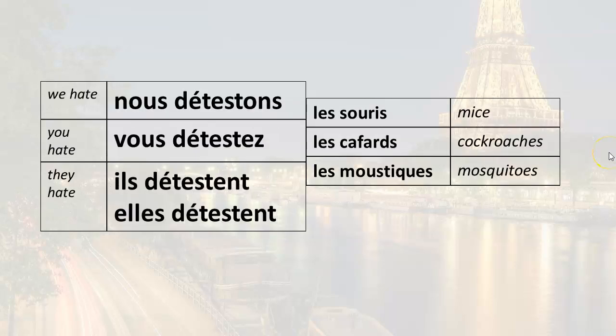So let's put it together with the vocabulary we already know. We hate mice, nous détestons les souris. We hate cockroaches, nous détestons les cafards. We hate mosquitoes, nous détestons les moustiques.